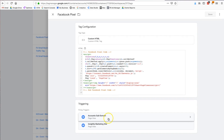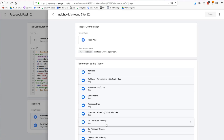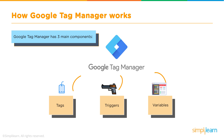That's the structure of Tag Manager: tags, triggers, and variables. Variables are basically additional information that Tag Manager may need for your tag and trigger to work. Variables are divided into built-in and user-defined. Common built-in variables include page path, page URL, hostname, and click class — they're there to get your tag and trigger to fire properly.